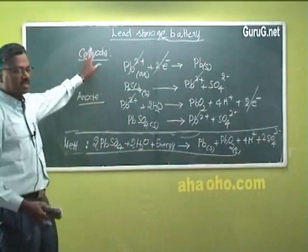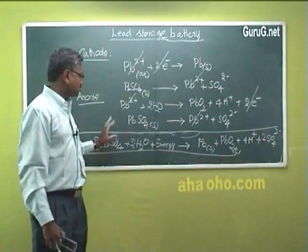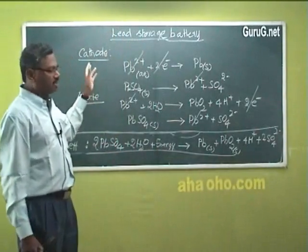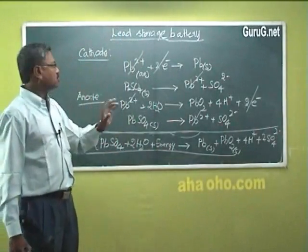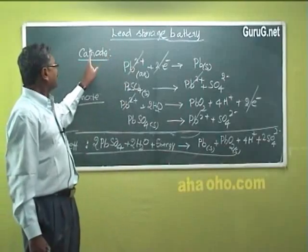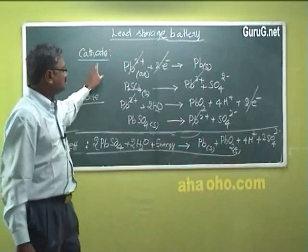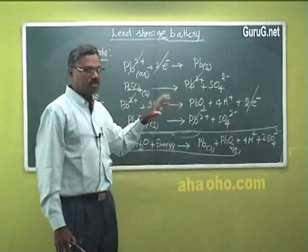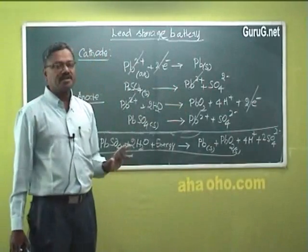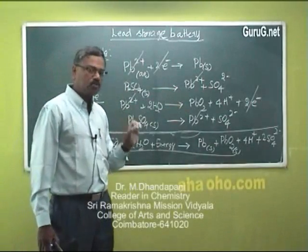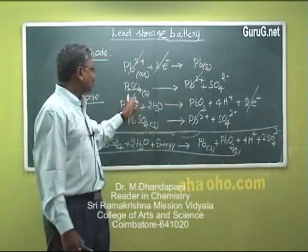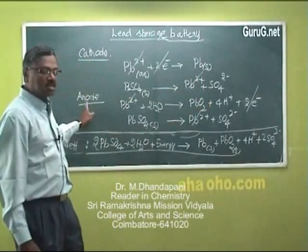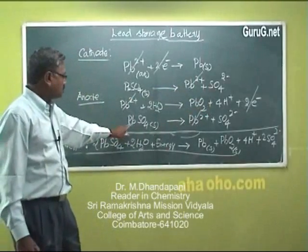These are the recharging reactions taking place in the lead storage battery during recharge mode. At the cathode, lead sulfate is utilized — any precipitate formed during discharge mode now gets dissolved. At the cathode, lead sulfate forms Pb²⁺, which is then converted to lead solid. The same is the case at the anode, where lead sulfate becomes Pb²⁺.